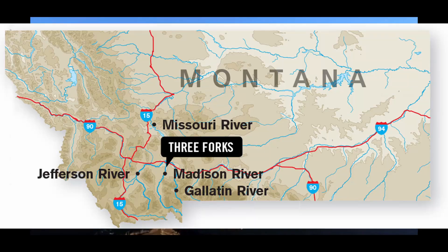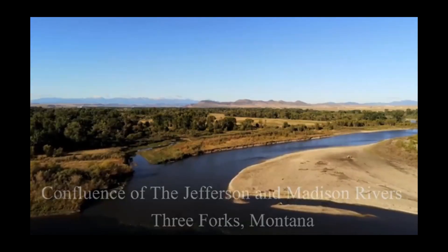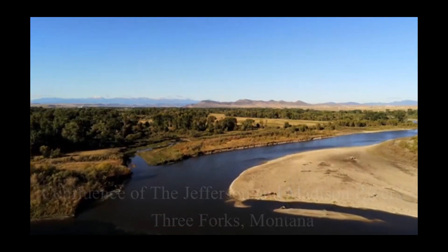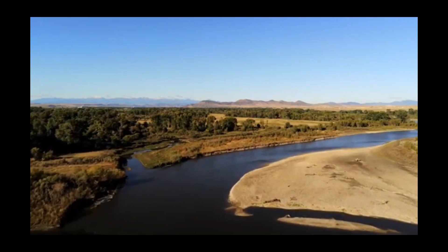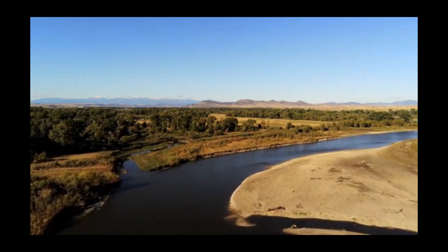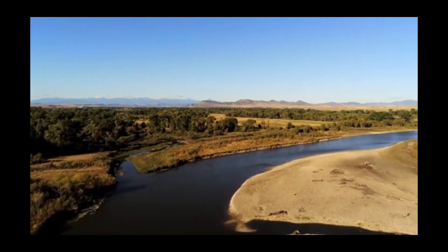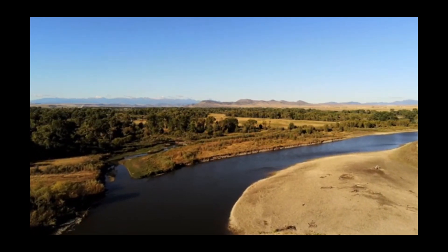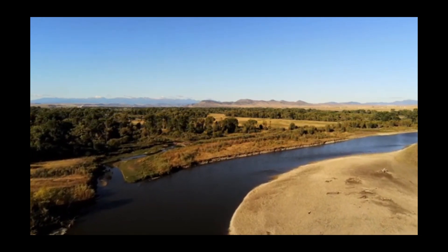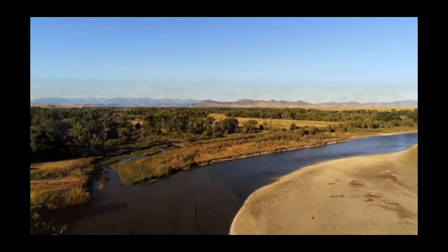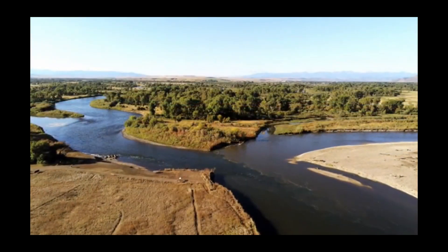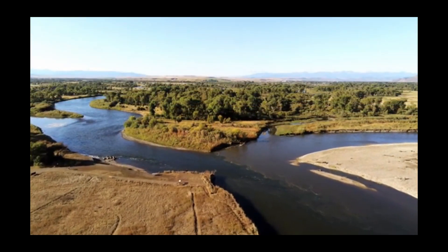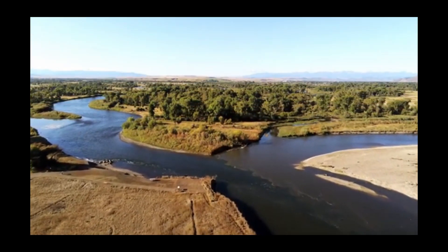Jefferson River, near Three Forks, Montana. The child of both the Beaverhead River and the Big Hole River, the Jefferson River first appears in the town of Twin Bridges, Montana, from which it flows northeast, meeting the Madison River north of Three Forks, Montana. The two then flow about two miles farther north to combine with the Gallatin and Madison to form the Missouri.